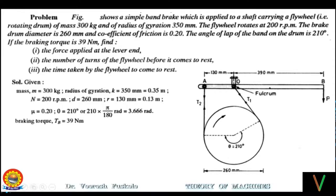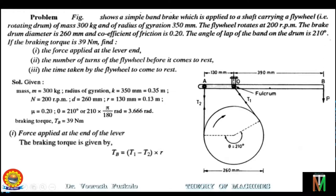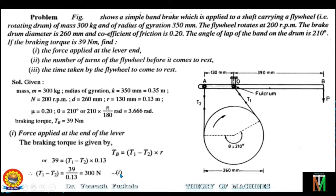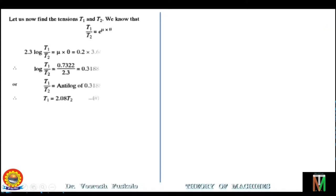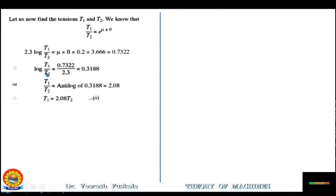To find the force applied at the lever end: the braking torque is given by Tb = (T1 − T2) × R. Putting the value of Tb, we get T1 − T2 = 300 N — this is equation one. Now for the ratio of tensions: T1/T2 = e^(mu·theta). Writing in terms of log: 2.3 log(T1/T2) = mu × theta = 0.2 × 3.66 = 0.7322. Therefore log(T1/T2) = 0.3188, giving T1/T2 = 2.08, and thus T1 = 2.08·T2 — this is equation two.